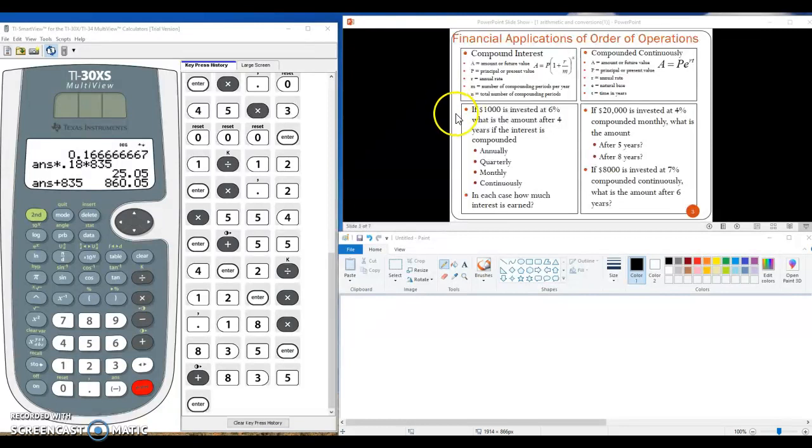So let's take a look at this box right here and work through this example. If a thousand dollars is invested at six percent, what is the amount after four years if the interest is compounded first annually, then quarterly, then monthly, then continuously.